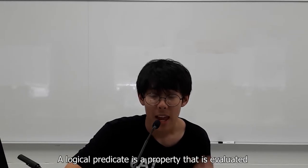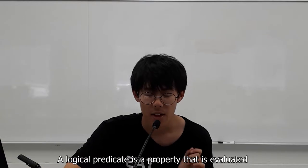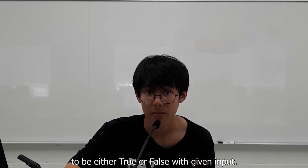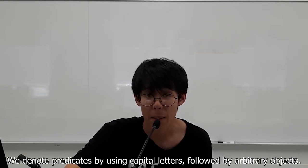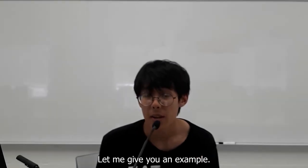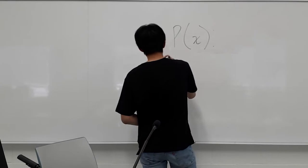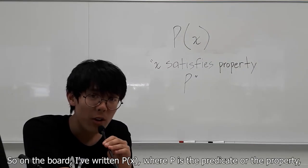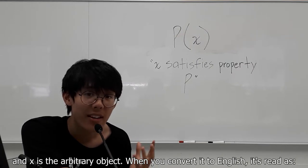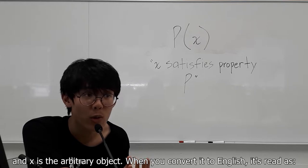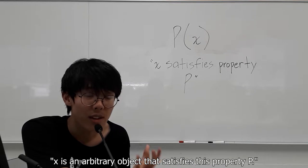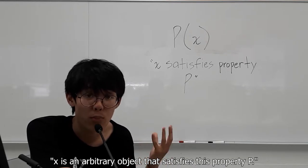Let's start off by talking about what a predicate is. A logical predicate is a property that is evaluated to be either true or false with given input. We denote predicates by using capital letters followed by arbitrary objects. Let me give you an example. So on the board, I've written P of X. P is the predicate or the property, and X is this arbitrary object. And when you convert it to English, it's read as X is an arbitrary object that satisfies this property P.